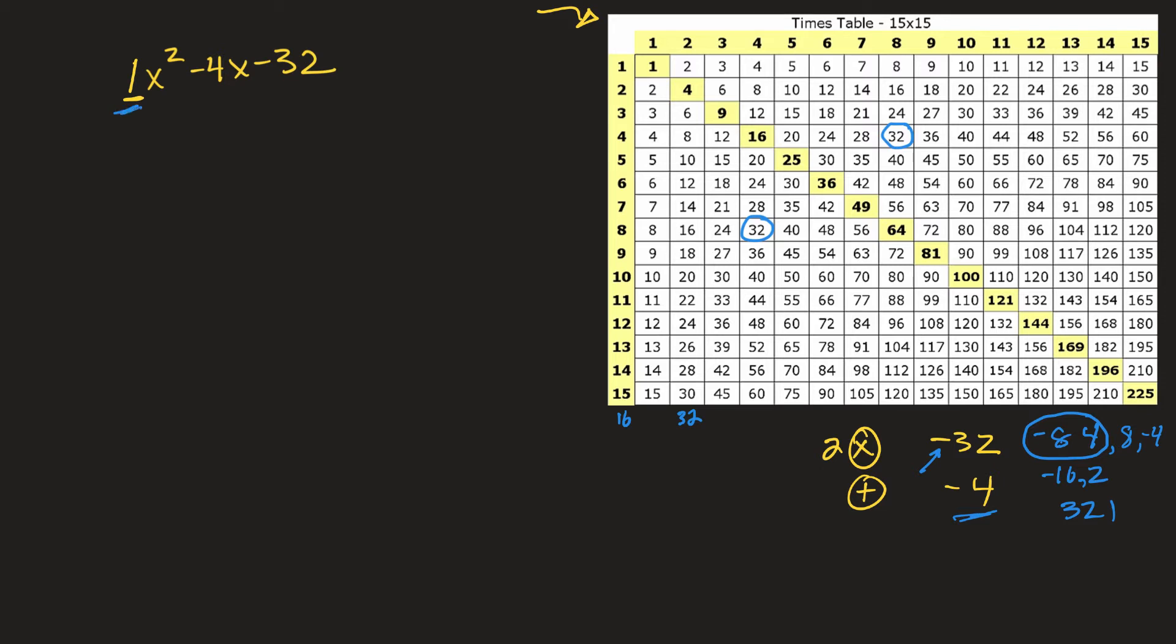So, since there's just a 1 out front there, I can just take the x squared and split it into here and here, take my 32 and split it using those numbers right there. So it would be negative 8 and a positive 4, factored. If you want to check, you can. x times x, x squared. x times 4 is a positive 4x. Negative 8 times x, negative 8x. Negative 8 times 4, negative 32.